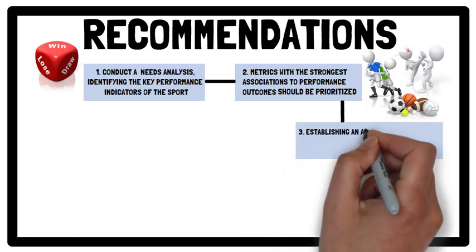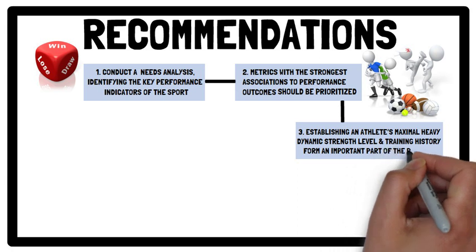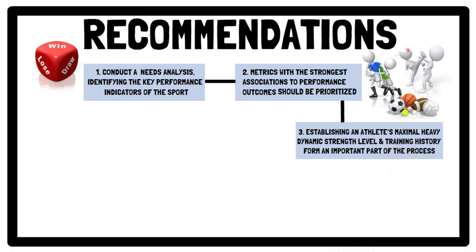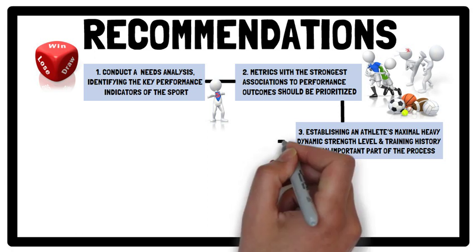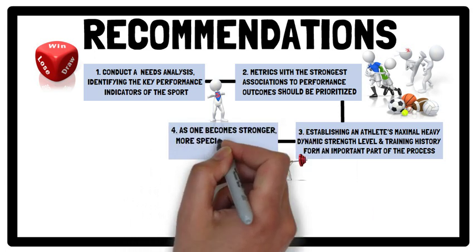Establishing an athlete's maximal heavy dynamic strength level and training history form an important part of the process. Those who are stronger — i.e. a one-repetition maximum back squat of two times their body mass — will display superior adaptations to high-velocity training such as ballistic and explosive training and weightlifting derivatives. Whereas those who are weaker or with low-level training experience will improve across a broad range of strength qualities when exposed to heavy strength training. Consequently, as one becomes stronger, more specific and targeted training is recommended.